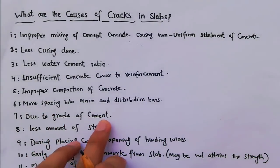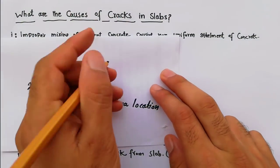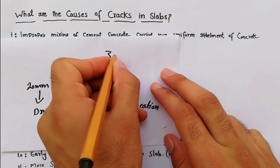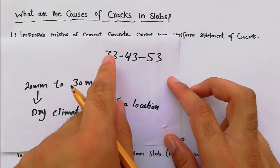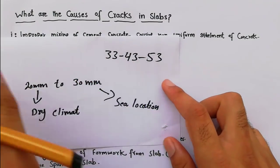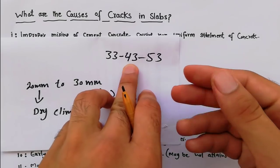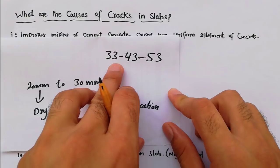Seventh, due to grade of cement. We know that we have three types of cement grade: one is 33, another one is 43, and the last one is 53. So we have to use the design grade. When we complete the slab design, we have to use the cement grade according to design.